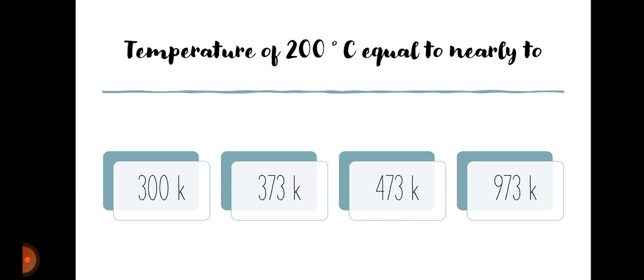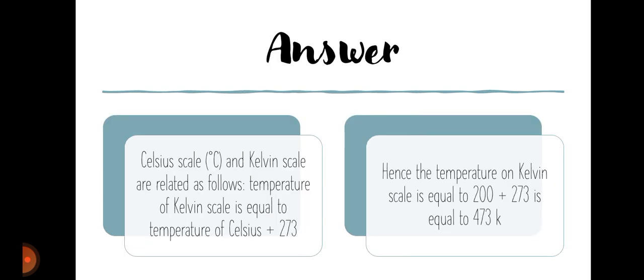Temperature of 200 degrees Celsius is equal to nearly — we start from the Kelvin scale, we add 273. So 273 plus 200, our answer is 473K. Answer C is correct. The Celsius scale and Kelvin scale are related: temperature on the Kelvin scale equals temperature in Celsius plus 273. So 200 plus 273 equals 473K.